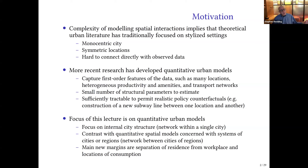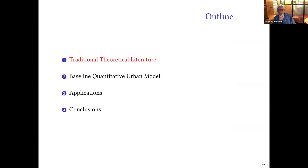Within cities, there's huge volumes of commuting across census tracts, and the places where you consume differ quite a lot from the places where you live — those margins become much more relevant within cities. I'll briefly set the background with the traditional theory literature, then give an overview of what these quantitative urban models look like, and then focus on some applications. The traditional theoretical approach focused on very stylized settings: the so-called Alonso-Muth-Mills monocentric city, where all employment is concentrated in a central business district, and workers live at different distances from it.